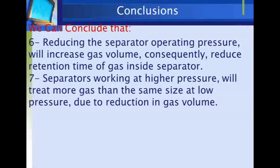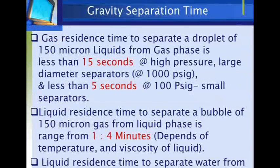Regarding the time required for gravity separation: the time to separate 150-micron liquid droplets entrained in the gas phase is less than 15 seconds at 1000 PSIG in large-diameter separators, and less than 5 seconds at 100 PSIG in small separators. Therefore, the gas residence time in separators must exceed the time required for the separation process. For liquid, the residence time to separate 150-micron gas bubbles from liquid ranges from 1 to 4 minutes depending on temperature and viscosity. The liquid residence time to separate water from oil is usually 20 to 30 minutes depending on oil density, temperature, and viscosity.